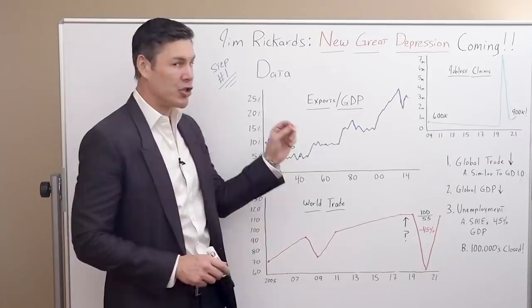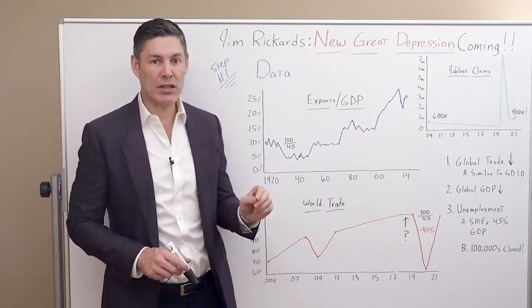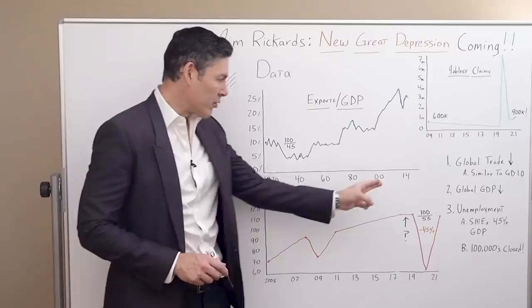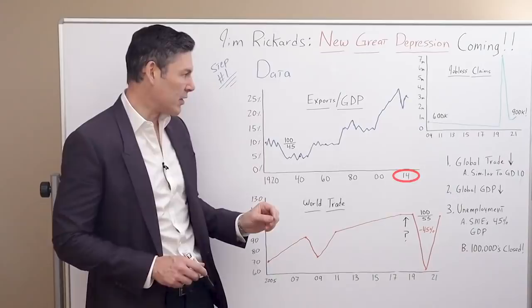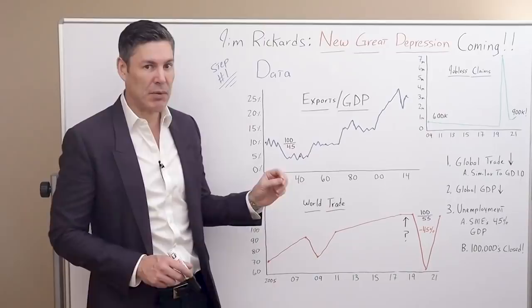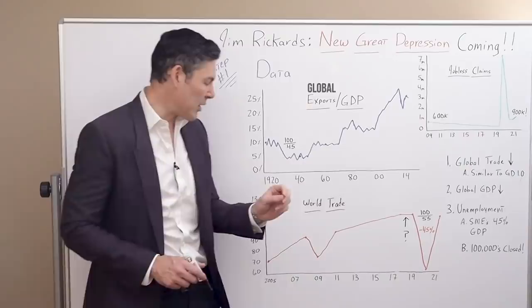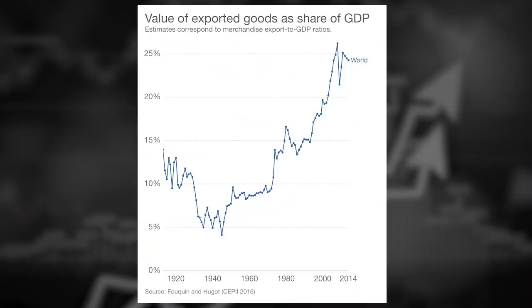He obviously compares Great Depression 2.0 with the original in the 1930s. So we look at a chart going back to 1920 all the way to 2014. These are exports in relation to GDP — global exports as a percentage of global GDP. On the left, from 0% up to 25%. In the 1920s, we were hovering right around 10%, up and down a little bit.